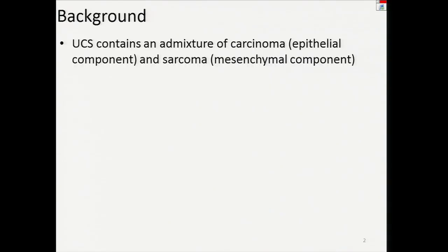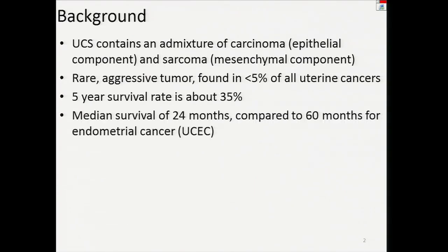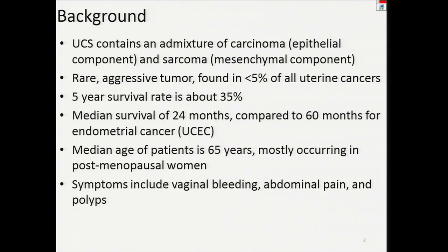UCS contains an admixture of carcinoma and sarcoma — a carcinomatous component and a sarcomatous component. It is a rare and aggressive tumor found in less than 5% of all uterine cancers, with a five-year survival rate of about 35%. The median survival is only 24 months compared to 60 months for endometrial cancer. The median age of the patient is 65 years, mostly occurring in postmenopausal women, with symptoms including vaginal bleeding, abdominal pain, and polyps.